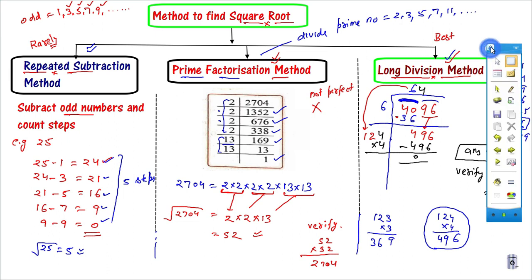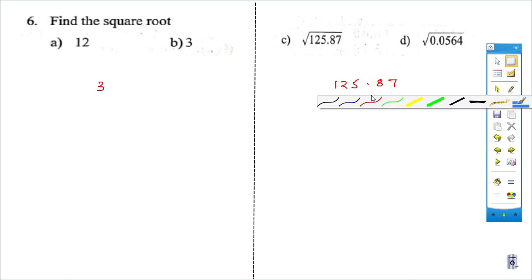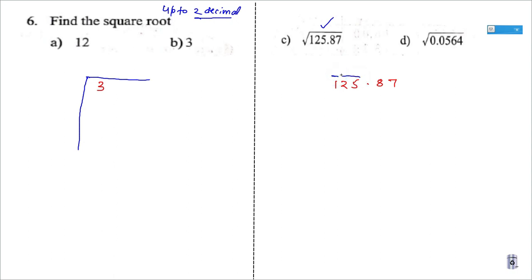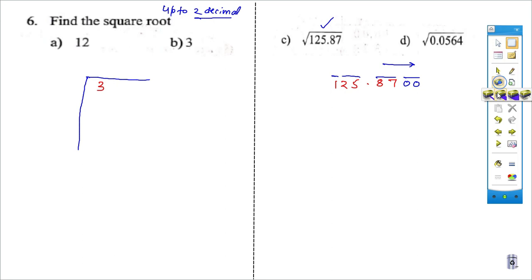Now I will give more stress on this long division method. I will take two more examples. For this method, you do not need a perfect square. We will find the Square Root of a number up to two decimal places. When there is a decimal, there is a trick: to the left of the decimal, pairing goes from right to left; to the right of the decimal, pairing goes from left to right. If you don't have a second pair after the decimal, you can put zero — because adding zeros after a decimal does not change the value.